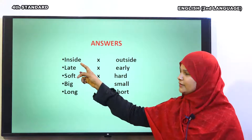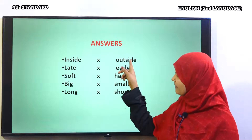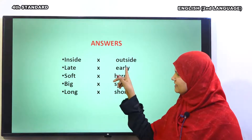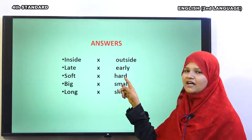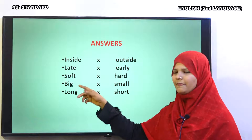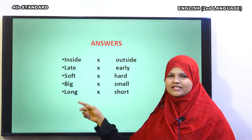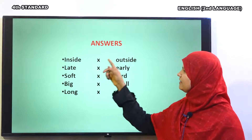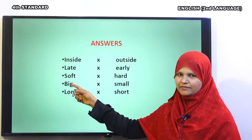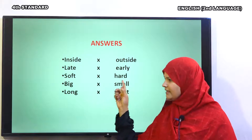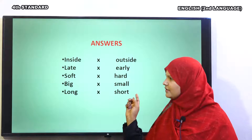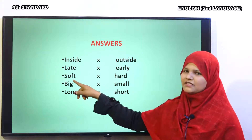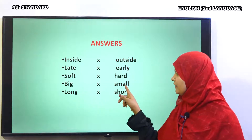Inside means andar, outside yaane bahar. Andar-bahar. Late means derse, early yaane jaldi. Derse-jaldi. Soft yaane narm, the opposite of soft is hard, yaane sakht. Narm-sakht. Big yaane bada, small means chota. Long yaane lamba, short means past. Can you answer me? Inside — outside, late — early, soft — hard, big — small, long — short. Read it once again at your home.